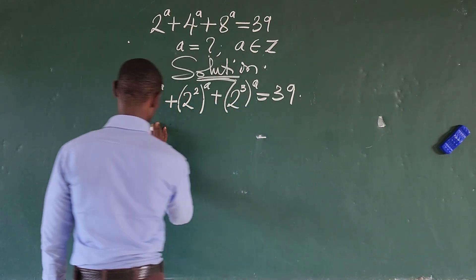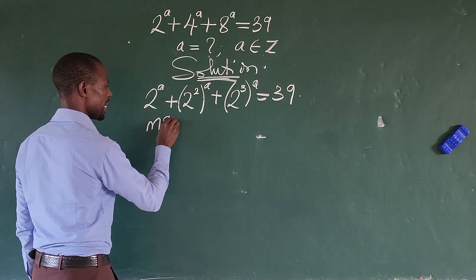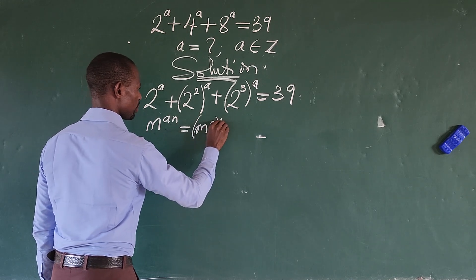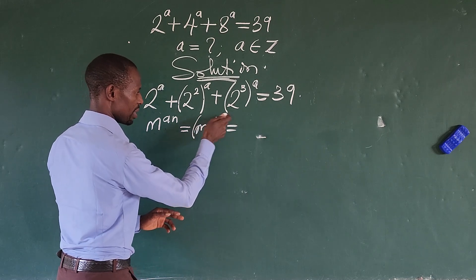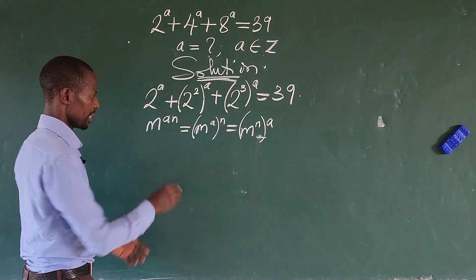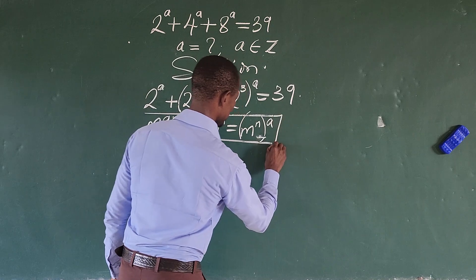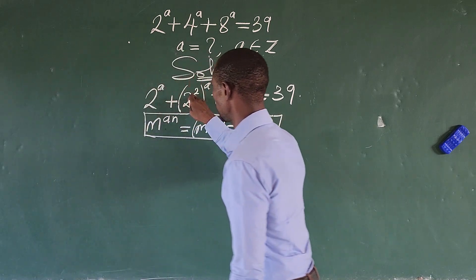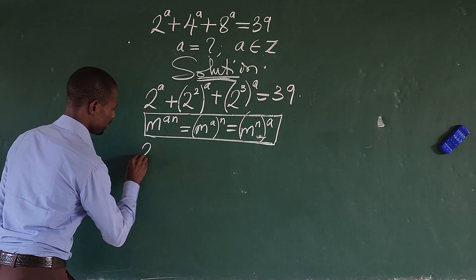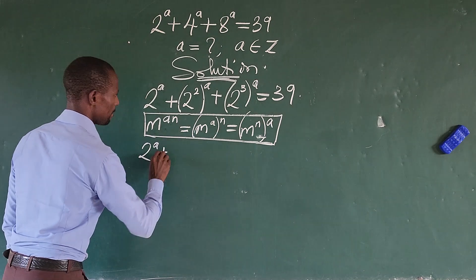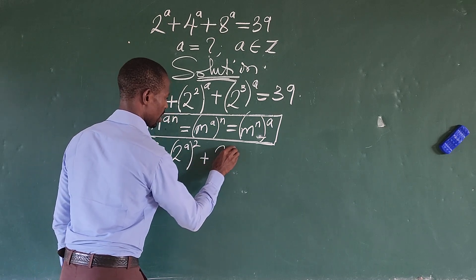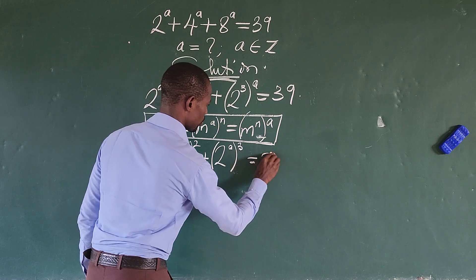We're going to apply the law of indices. We see that if you have m to the power of a·n, this is the same thing as m to the power of a, in bracket, raised to the power of n. We can move this a in and bring this out to give us m to the power of n, to the power of a. So using this law, we shift the a in and move the 2 and 3 out. We're going to have 2 to the power of a, plus 2 to the power of a in bracket to the power of 2, plus 2 to the power of a in bracket to the power of 3, equal to 39.